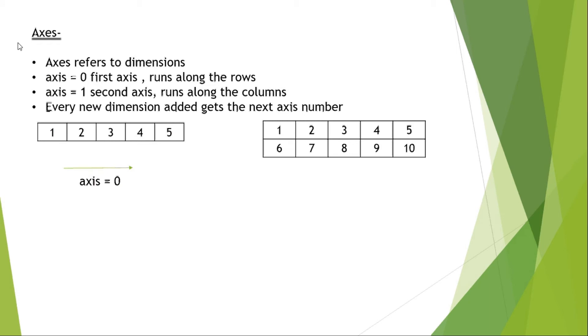Suppose we have another array. Here, obviously, we are having two dimensions. The first dimension will be known as axis 0, consisting of two rows. And the next axis is axis 1, which is covering all the columns. The number of columns in this are 5.